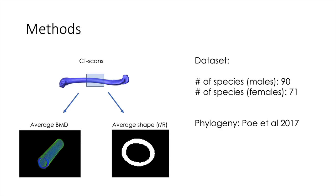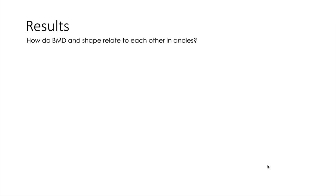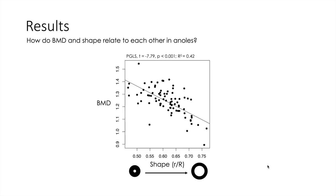For this presentation I will show the results for males because there are more species, and for the analysis I used the phylogeny of Anolis from Poe et al. 2017. For the results — the first question was how bone mineral density and shape relate to each other in the femurs of Anolis. What I found was a very nice, relatively strong negative relationship between bone mineral density and shape, which gives us the first evidence that this might be a case of many-to-one mapping relating architectural design and material properties.